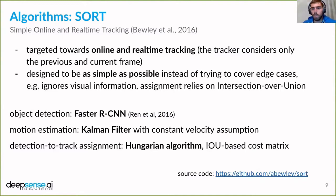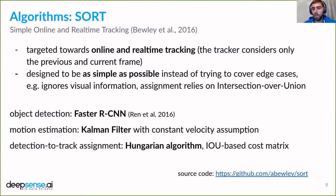Another very important element of the tracking algorithm in SORT was usage of the Kalman filter framework for motion estimation — I have a separate slide for that. For the assignment of detections to tracks, they used the Hungarian algorithm, which is a minimum cost assignment algorithm based on a cost matrix. In this case, the matrix was based on IOU values.